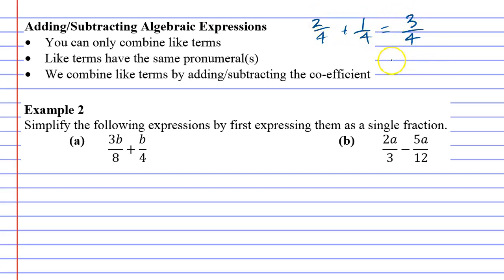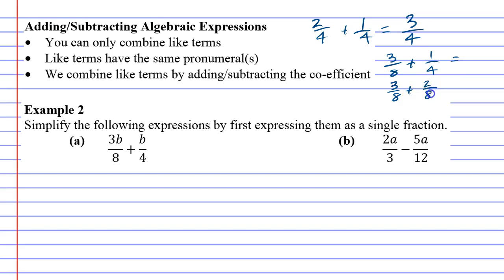That's a nice basic one, but it gets more difficult when you have a question similar to question A. Imagine I had 3 over 8 plus a quarter. This becomes tricky because the denominators are not the same, and the only way to truly add fractions is to make the denominators the same. So we'll keep 3 over 8 as 3 over 8, but we're going to change 1 over 4 to 2 over 8.